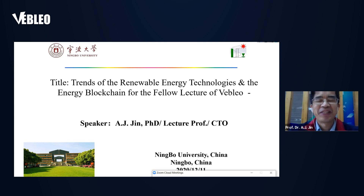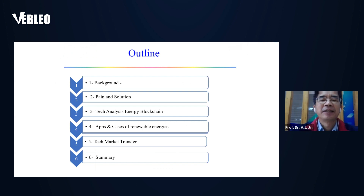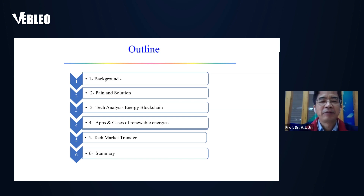Good morning everybody. My name is Jerry Jing. I really appreciate you getting up so early to attend my lecture. The talk title is about the trend of renewable energy technology and energy blockchain. The outline is divided into six sections — I'll cover the background, the problem, my approach, results, products in development, and finally some takeaways from the seminar.